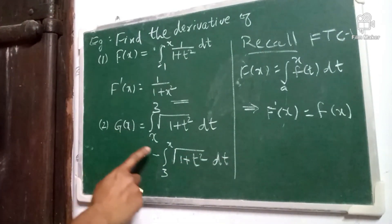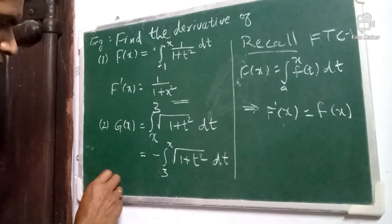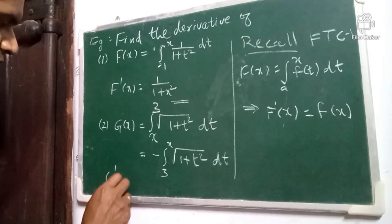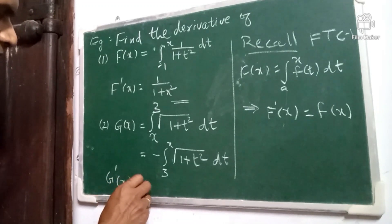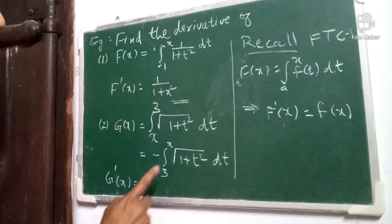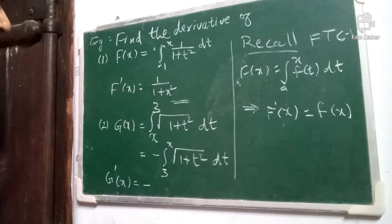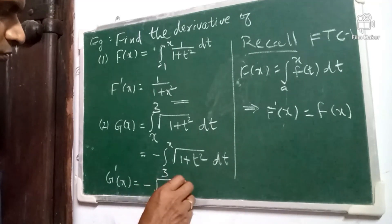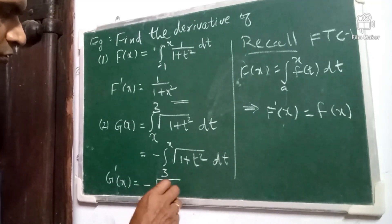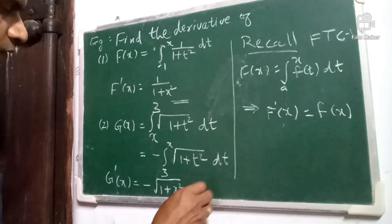Now we can directly apply the fundamental theorem of calculus Version 1 and obtain the derivative of g: g'(x) is equal to the value of the integrand at the upper limit, which is √(1+x²). That is it.